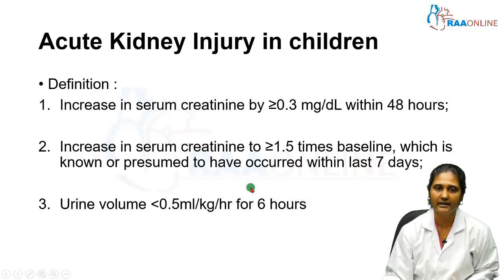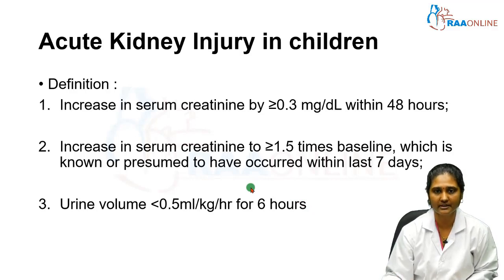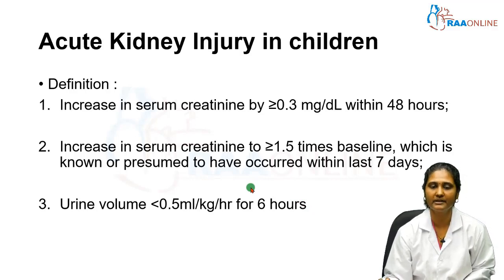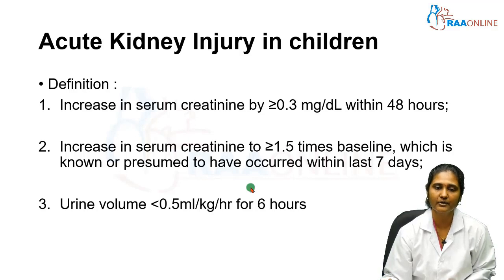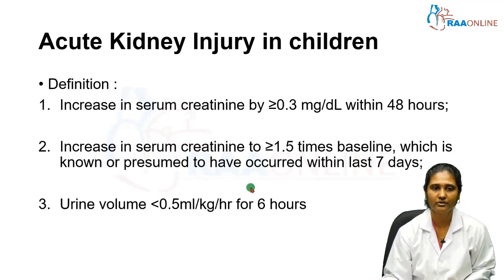AKI can occur mostly in a previously normal kidney with normal renal function. However, it can also occur in the setting of pre-existing renal disease, such as acute-on-chronic renal failure. So AKI can present in both these scenarios.